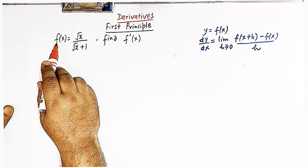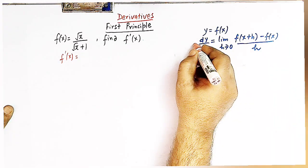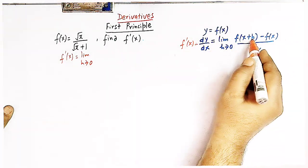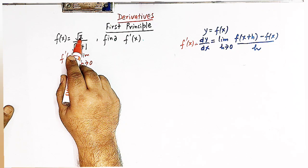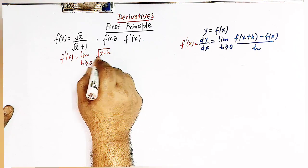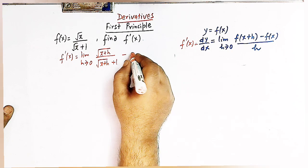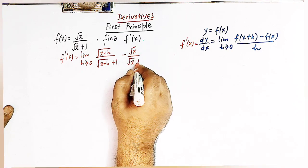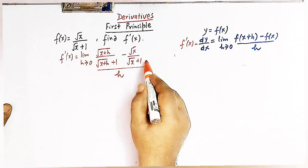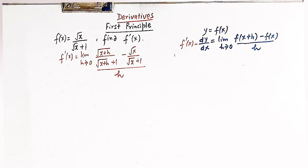Now for this function f(x), I will find out f(x+h). So f′(x) is given by this limit: limit h tends to 0 of [f(x+h) − f(x)] / h. f(x+h) is obtained by replacing x with x+h in the given function, giving us √(x+h) / (√(x+h) + 1), minus f(x) which is √x / (√x + 1), all divided by h.